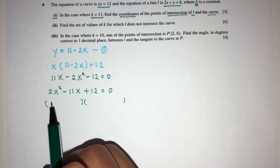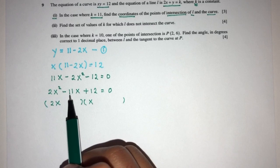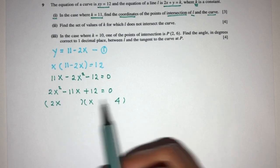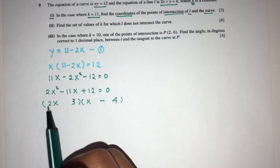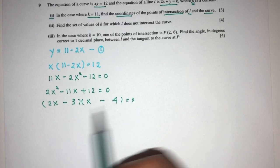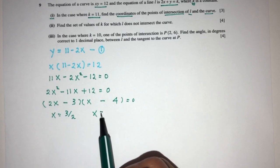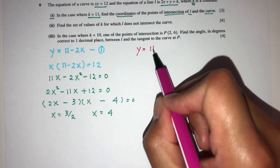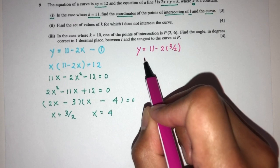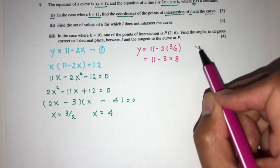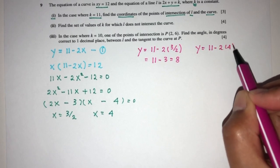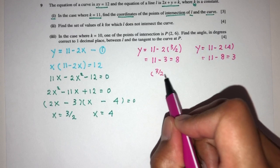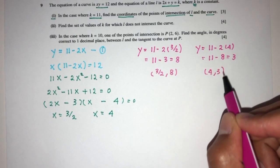That will be 2x times x. We need minus 11, so we can choose factor pairs like 1 times 12 or 4 times 3. Putting 4 and 3 gives minus 8, which is 2x times minus 4 and minus 3. So x equals 3 over 2, and x equals 4. For each value, we find y. When x equals 3/2, y equals 11 minus 2 times 3/2, which is 11 minus 3, giving y equals 8. When x equals 4, y equals 11 minus 8, giving y equals 3. So the points of intersection are (3/2, 8) and (4, 3). That is Part 1.